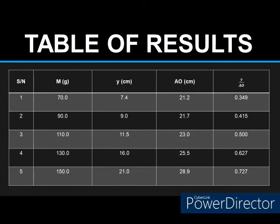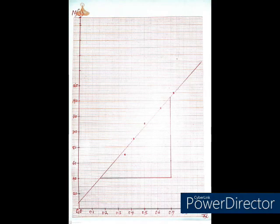So here is a breakdown of our table. You can see from the table that M, Y, AO, and Y over AO are all arranged and tabulated accordingly. So I would plot a graph of M against Y over AO, and this is what the graph looks like.